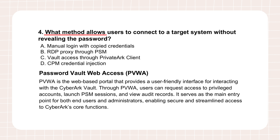Question four: What method allows users to connect to a target system without revealing the password? Options are A, manual login with copied credentials; B, RDP proxy through PSM; C, vault access through PrivateArk client; D, CPM credential injection. The answer is B — RDP proxy through PSM. When you initiate an RDP session through the PSM, the PSM steps in, fetches the needed credential from the vault — the one managed by the CPM — and uses that credential to log into the target Windows machine for you. The user gets the RDP session and can interact with the desktop, but the actual password is never shown to them or transmitted to their machine. The PSM is brokering the whole thing, handling the secret handshake with the target system using the vaulted password, abstracting the password completely away from the end user.